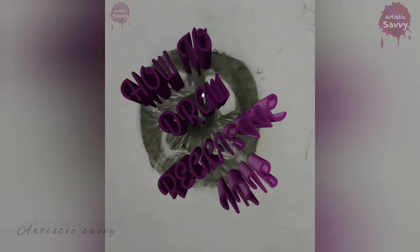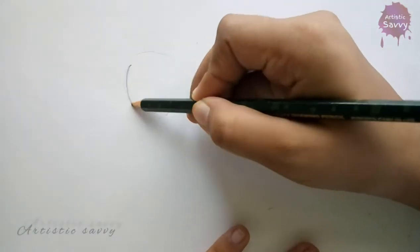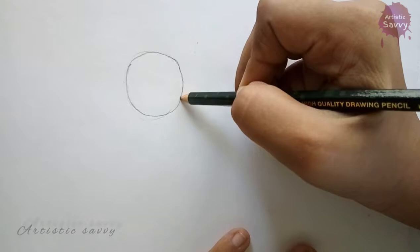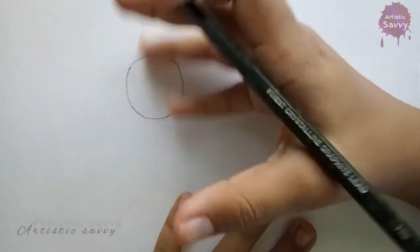Hi everybody, welcome back to my channel. In this video I'll be showing you how to draw a realistic iris. Let's move on to the video. First off, I'm going to draw a circle, and in the middle of it I'm going to draw my pupil.